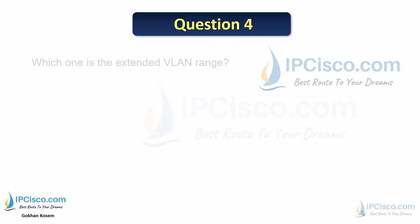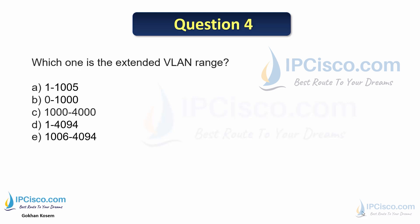Question 4: Which is the extended VLAN range — 1–1005, 0–1000, 1000–4000, 1–4094, or 1006–4094? The answer is 1006–4094.